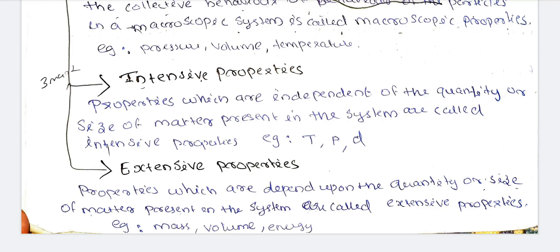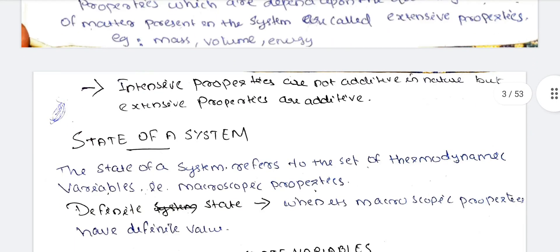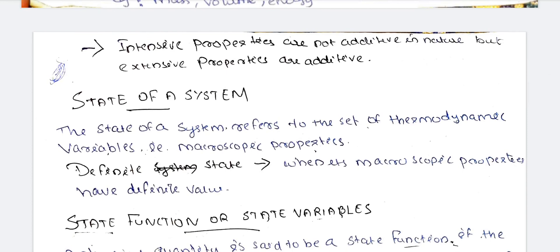Extensive properties are those which depend on the quantity or size of the matter present in the system. Examples include mass, volume, and energy. Intensive properties are not additive in nature, but extensive properties are additive.